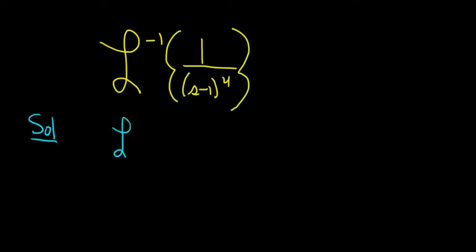Well, you rewrite the inverse Laplace, and we want to shift this. We want this to be an s. So you write it as 1 over s to the 4th. Then you write a line, and then s gets replaced with s minus 1. So we shift.